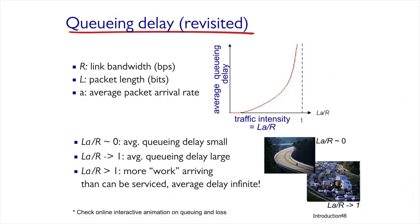In order to estimate the queuing time in a router, we'll use R to denote the bandwidth — that is, the speed at which data can be transmitted on the line — L for the size of the packet, and A for the rate of packets arriving in a router. It is very important to adjust all measurement units to the same unit — for example, all in bytes or all in bits — for the calculation to be mathematically correct.